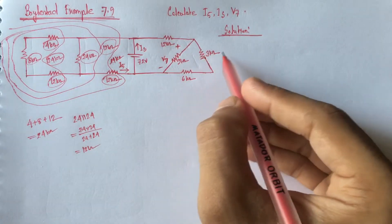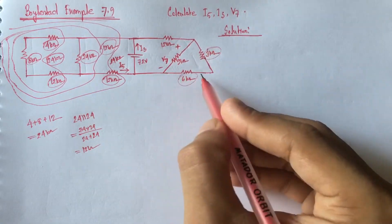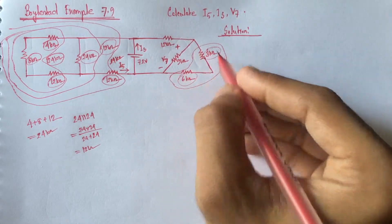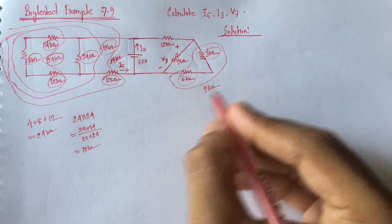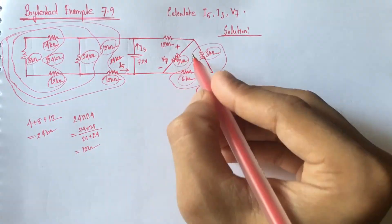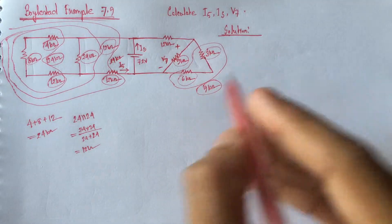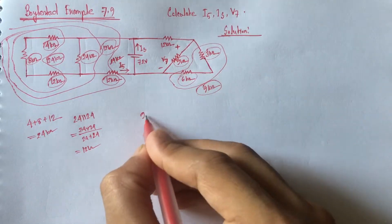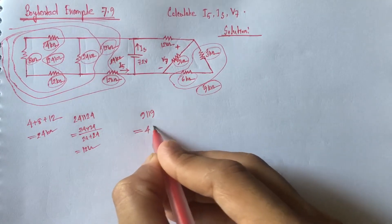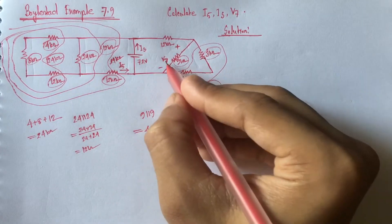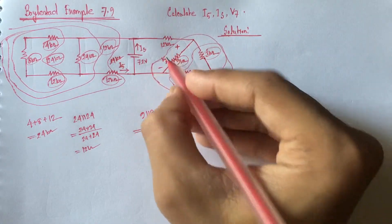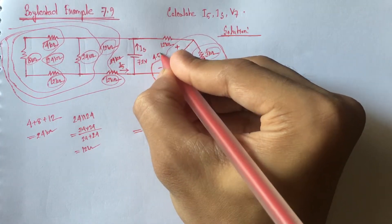From this side we see that 3 Kiloohm and 6 Kiloohm are in series, so this can be replaced by a resistance of 9 Kiloohm. Now this 9 Kiloohm and the other 9 Kiloohm are in parallel. Two equal 9 Kiloohm resistances can be replaced by a resistance of 4.5 Kiloohm. So the equivalent of this resistance is 4.5 Kiloohm.